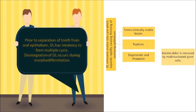Moscow and Blue proposed that prior to separation of the tooth germ from the oral epithelium, the dental lamina has the tendency to form multiple distinct keratinizing cysts. They also proposed that disintegration of the dental lamina occurs during the morphodifferentiation or early bell stage. The remnants of this dental lamina are seen in the corium between the tooth germ and the oral epithelium. These remnants evolve into small cysts, expand rapidly causing thinning of the overlying epithelium, forming clinically visible lesions — some undergo rupture, while others degenerate and disappear with keratin and debris being digested by multinucleated giant cells.